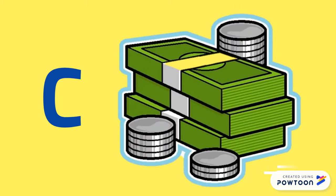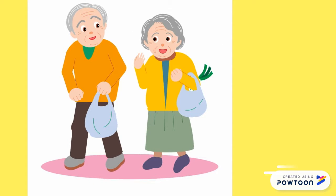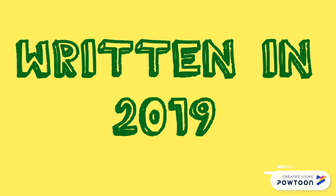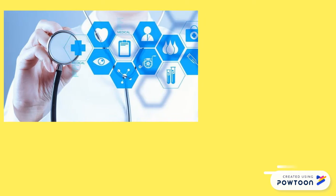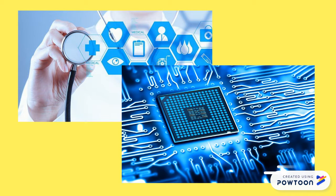The C stands for Currency. You should look at the age of the source and consider if you need more current information for your assignment. Sometimes a source published many years ago can be useful. Other times, especially if you're researching a health or technology topic, you may need to get the most recent information possible.